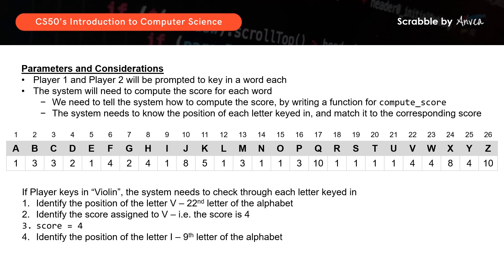I, which is the 9th letter of the alphabet. It checks against the table and determines that the letter I is worth 1 point. So now the score up to this stage will be 4 plus 1, and then it moves on to the next letter in the word, until it has a total score for the word violin.